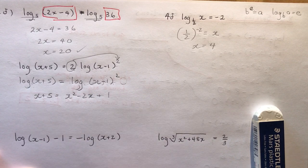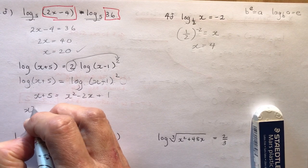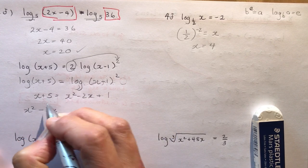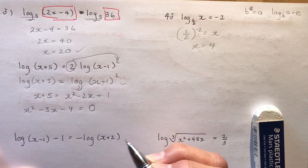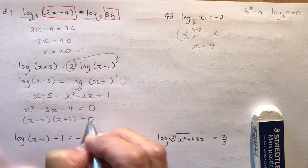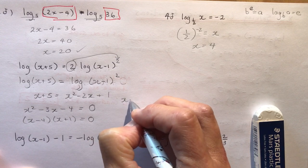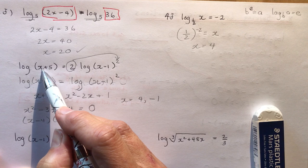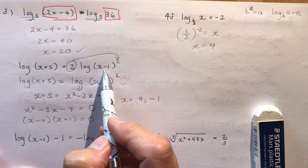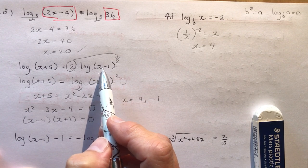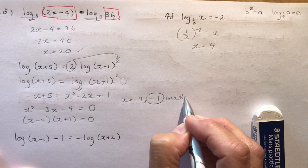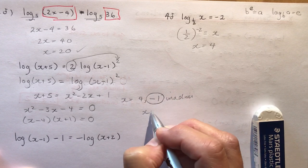Bring everything to one side to keep x squared positive: x squared minus 3x minus 4 equals 0. That factors as (x − 4)(x + 1) equals 0, giving x equals 4 or x equals negative 1. Plugging in 4 works. Plugging in negative 1 gives a negative log, so x equals negative 1 is inadmissible. Therefore x equals 4.